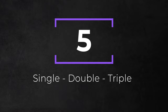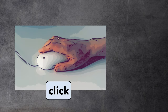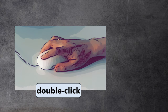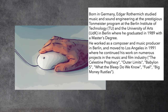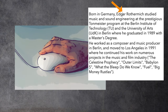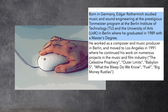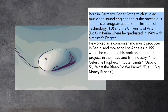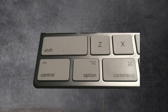Besides the confusion of how you click, the question is also how often you click. Typical click actions involve a single click and a double click. However, there is also the triple click. In applications that display text, one click puts the cursor between two characters, a double click selects the entire word, and a triple click selects an entire paragraph. Logic uses a triple click on the automation lane, as we will see later.